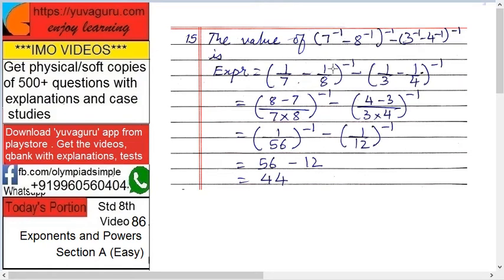So 1 upon 7 minus 1 upon 8 the whole raised to minus 1. Outside bracket minus 1 keep it as it is for now. Minus 1 upon 3 minus 1 upon 4 the whole raised to minus 1.